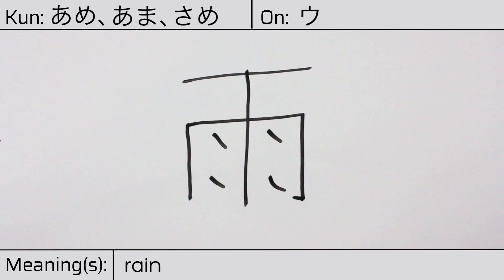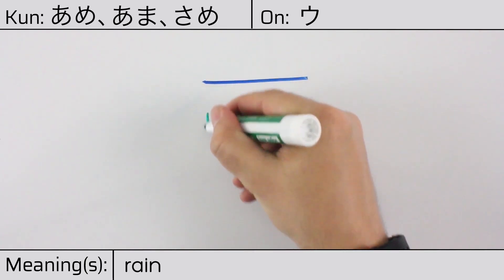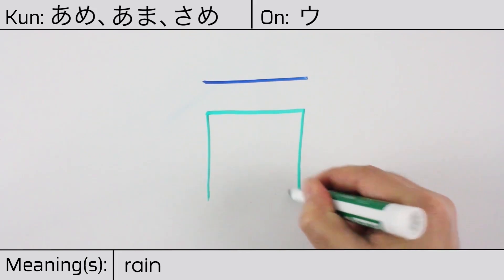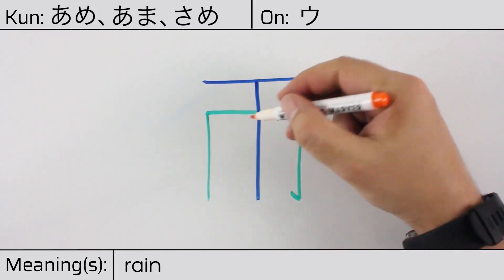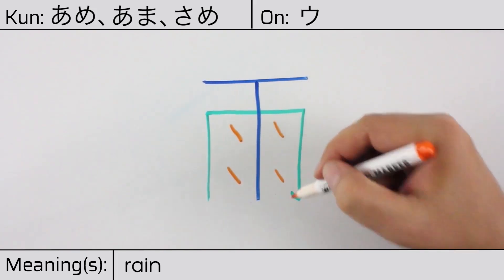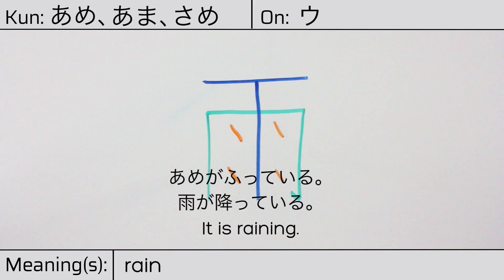This character is made up of the following radicals or parts: a single horizontal stroke on top, the enclosure radical, a single vertical line, then four dots which typically represent water. You can remember this kanji by thinking of it as rain on a window or umbrella. Our example sentence is: Ame ga fute iru — It is raining.